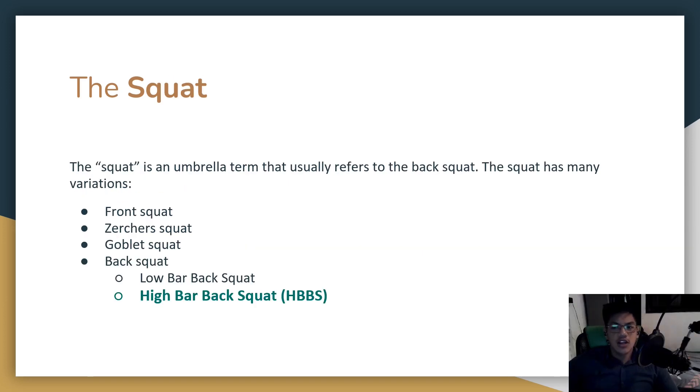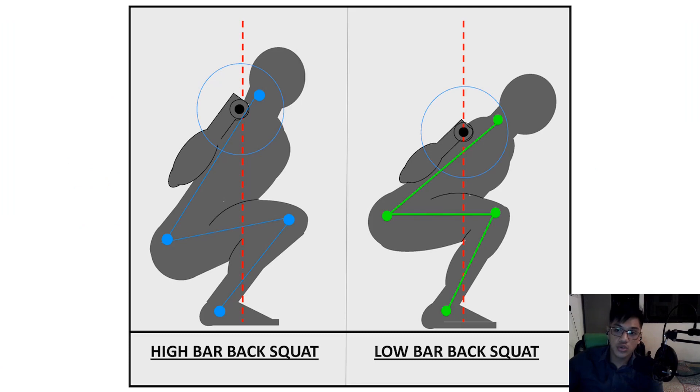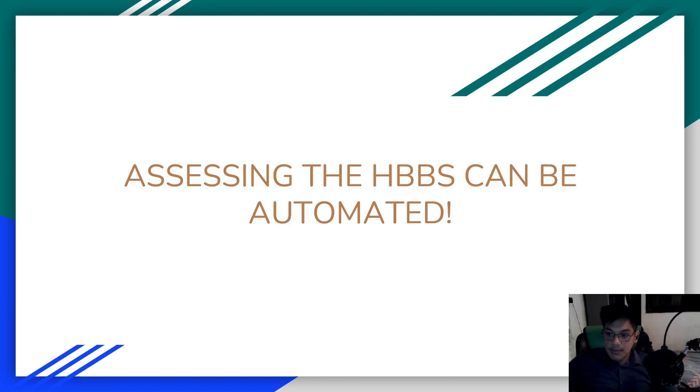The squat has a lot of variations such as the front squat, the Zercher squat, the goblet squat, but the term squat is simply an umbrella term that usually refers to the back squat. The back squat has two main types, the low bar back squat and the main focus of the study, the high bar back squat. The execution of these two types of squat are different enough for them to be distinct from each other. This is due to the placement of the bar relative to the body, which creates very different types of motion upon execution. Assessing the high bar back squat can be automated, which also happens to be the essence of the study.